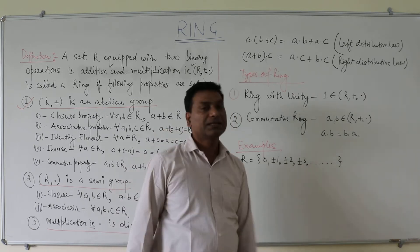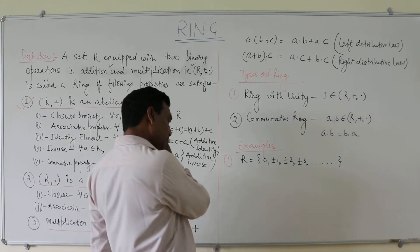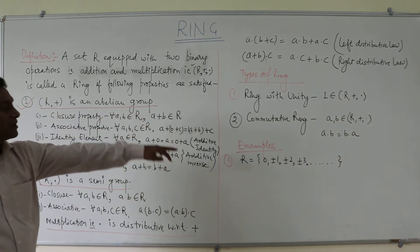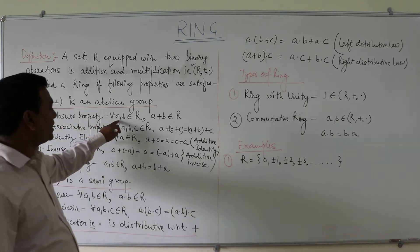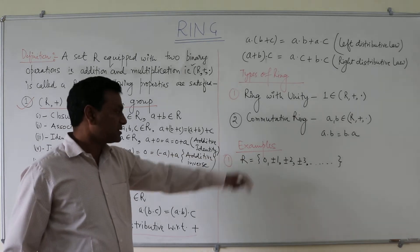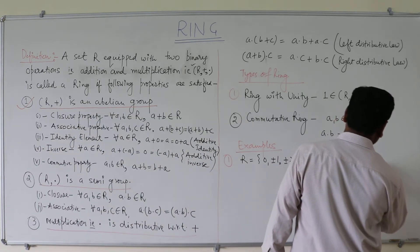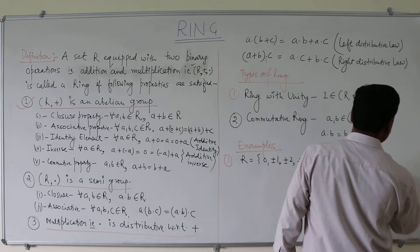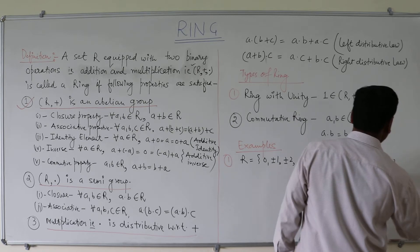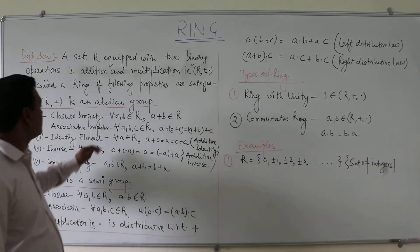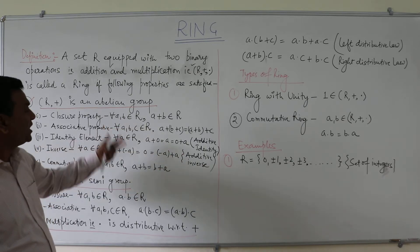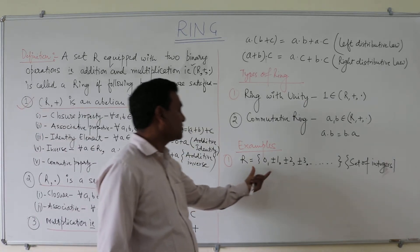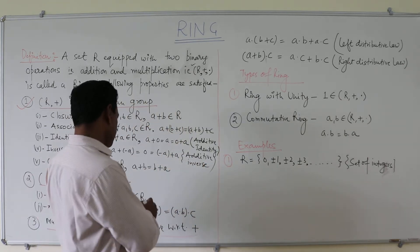Now we will see the properties. The first property is whether (R, +) is an Abelian group or not. First we will see the closure property. If we consider two elements from this set of integers, say 1 and 2, and we add these two, then that will also be an integer and will belong to this particular set. It means the closure property holds.